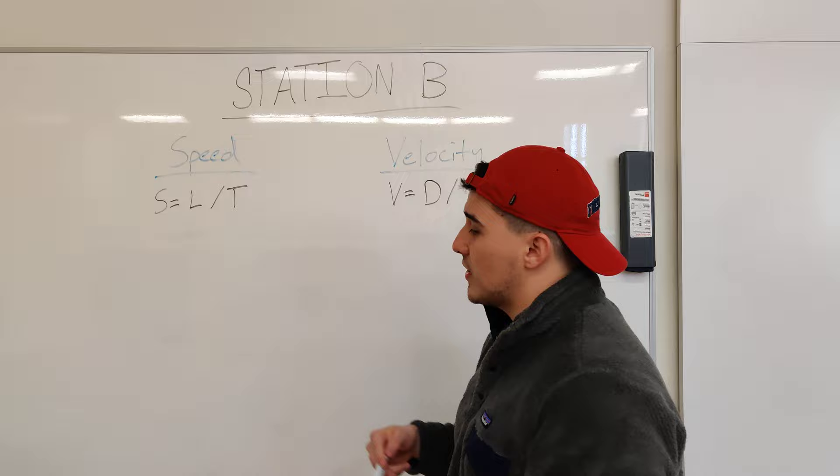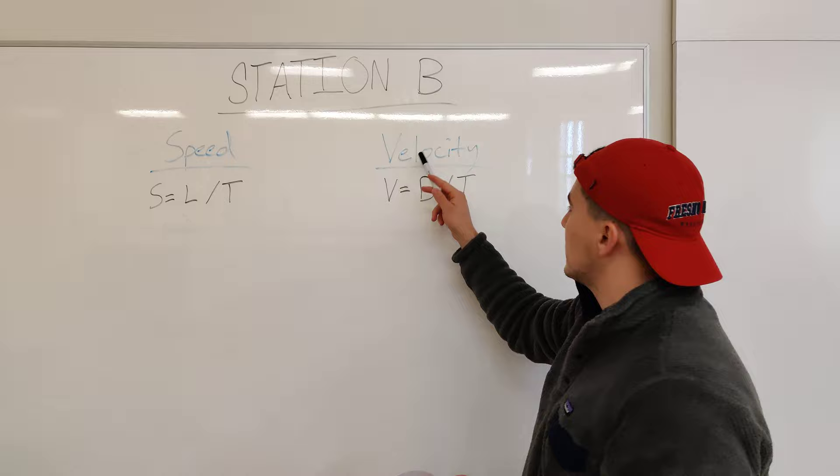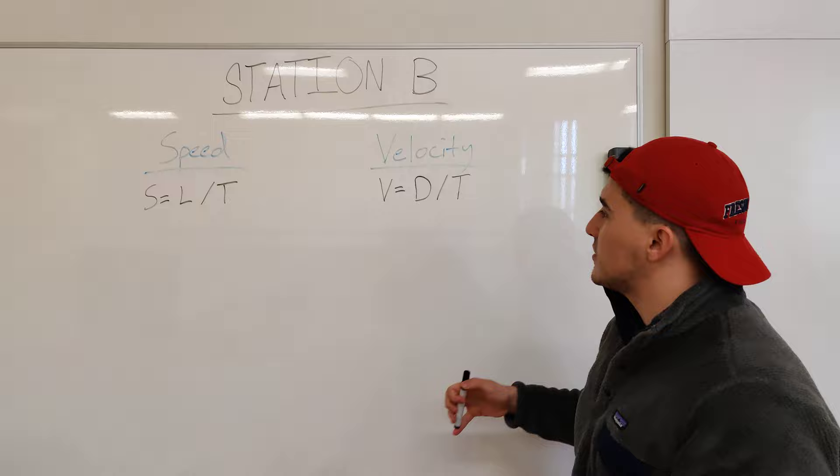Just like the last station, we're going to go over two terms: speed and velocity. Speed is the total distance traveled over a certain amount of time, while velocity is the total amount of displacement over that certain time.